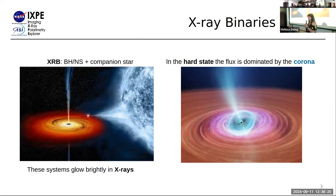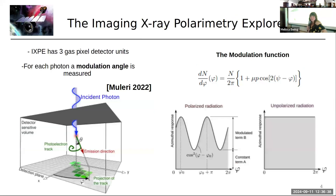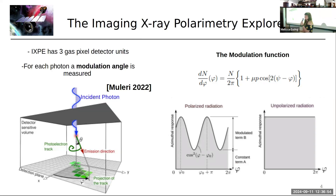Until recently, we only had the energy and arrival times of photons for spectral and timing analysis. But around 2021, with the Imaging X-ray Polarimetry Explorer (IXPE), we now have two brand-new diagnostics to study these systems: the polarization degree — what percentage of photons are polarized — and the polarization angle. IXPE has three gas pixel detector units on board.